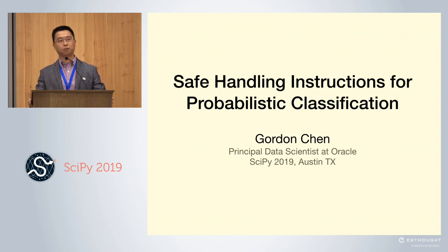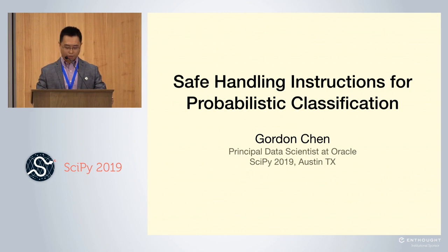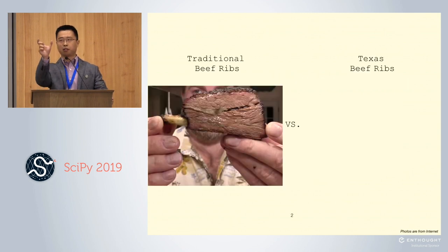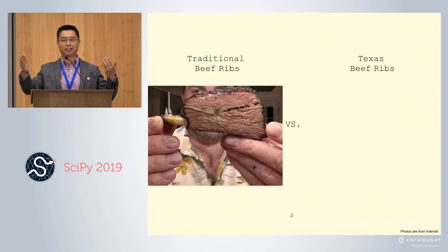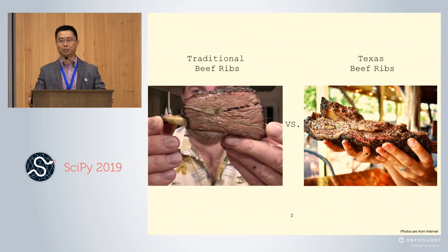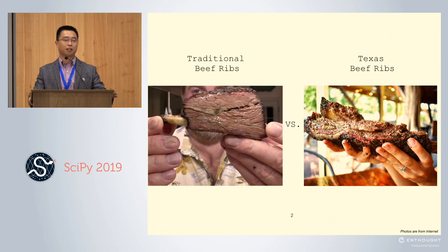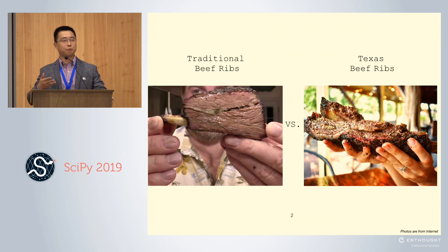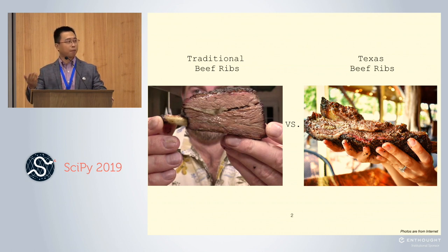So we went to a restaurant close to downtown. The name was Terry Black's. Originally I thought beef ribs should be about this size and I can probably finish one. I was too naive. This is actually what I got. I couldn't even finish one. As you all know, everything is bigger in Texas and we keep them weird in Austin. But Texas beef ribs is not just bigger or weird. It's better. It is juicy and has more flavors.